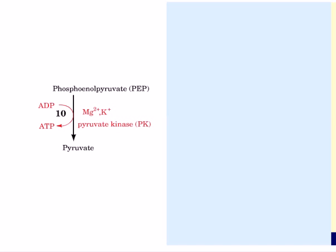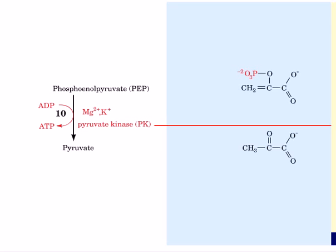The tenth reaction is the conversion of phosphoenolpyruvate to pyruvate. The reaction is catalyzed by pyruvate kinase and it requires ADP, magnesium ion, and potassium ion. Phosphoenolpyruvate is dephosphorylated and tautomerizes to form pyruvate. The phosphate is transferred to ADP to generate ATP.